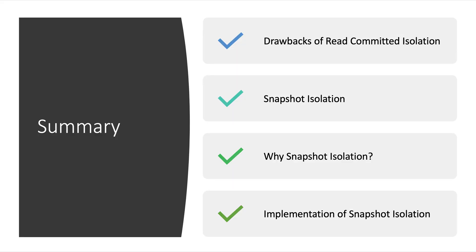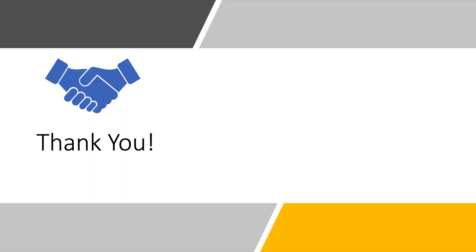To summarize, in this video we have understood the drawbacks of read committed isolation, what snapshot isolation is and why it is needed, and how it is implemented using multi-version objects to read a consistent snapshot of the database. I hope you have understood the differences between read committed and snapshot isolation. Please subscribe to my channel to get the latest notifications, and let me know in the comment section if you liked the video. Thank you.